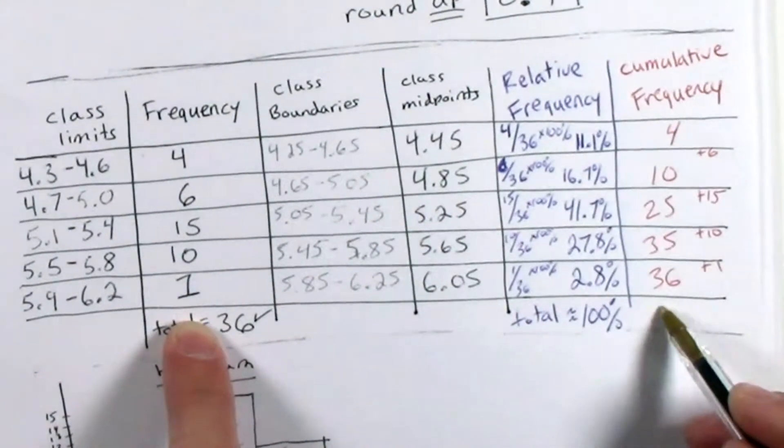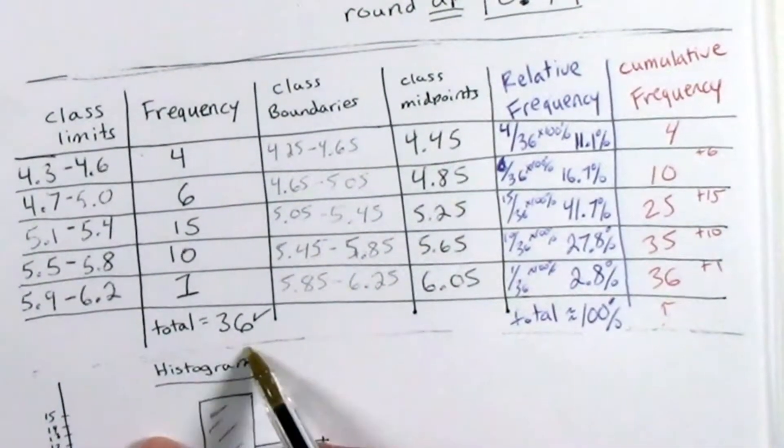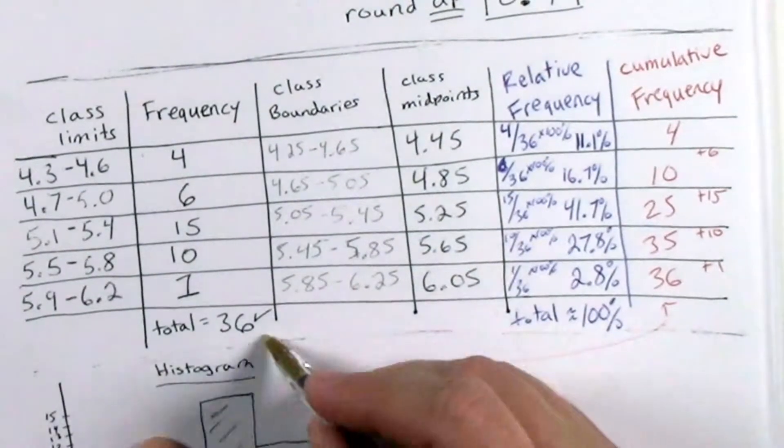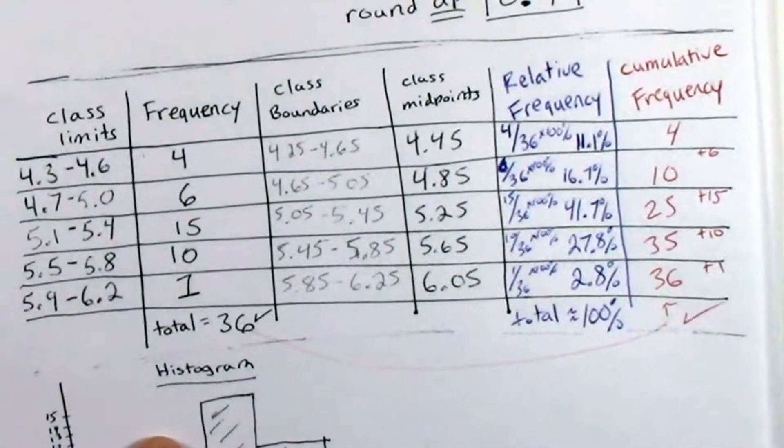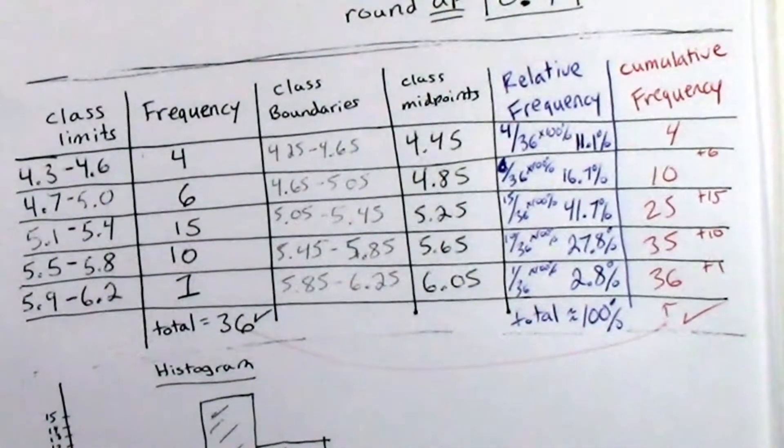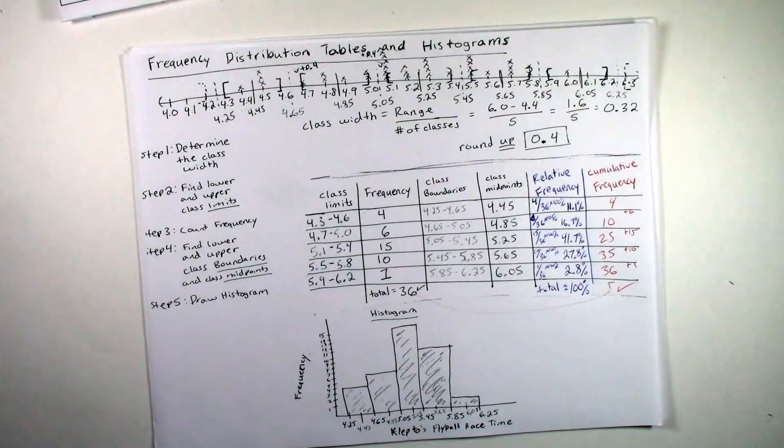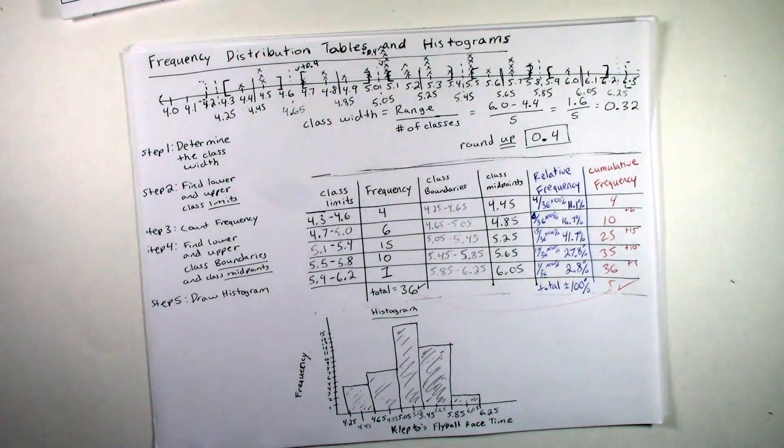Your cumulative frequency at the end should be the same as the sum of all of your frequencies, right? So it should be the same as your total. Okay, so there you go. That's how you add on columns for the relative frequency and the cumulative frequency to your frequency distribution table.